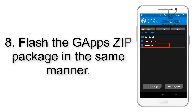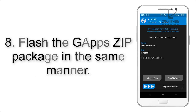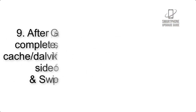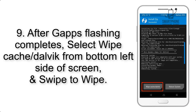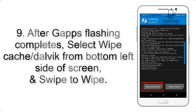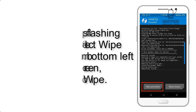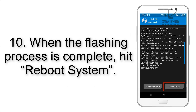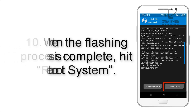Step 8: Flash the GApps zip package in the same manner. Step 9: After GApps flashing completes, select Wipe Cache and Dalvik from the bottom left side of the screen and swipe to wipe. Step 10: When the flashing process is complete, hit Reboot System.